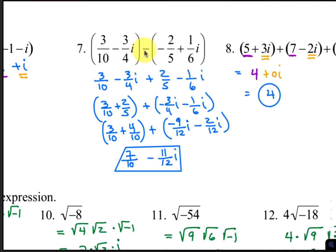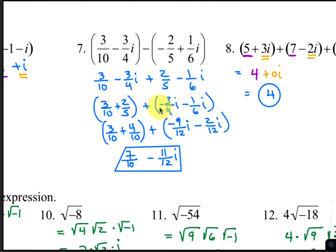For number 7, distribute the negative first into the second group, and that changes those signs. Then add the real parts, which is 3 tenths plus 2 fifths. We'll get a common denominator, and the 2 fifths would turn into 4 tenths. 4 tenths plus 3 tenths is 7 tenths. Add the two imaginary parts, which is negative 3 fourths i and negative 1 sixth i. When we combine those, the common denominator is 12. Negative 3 fourths becomes negative 9 twelfths, and negative 1 sixth becomes negative 2 twelfths, giving us negative 11 twelfths i.